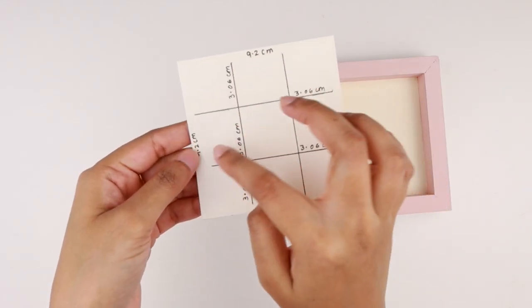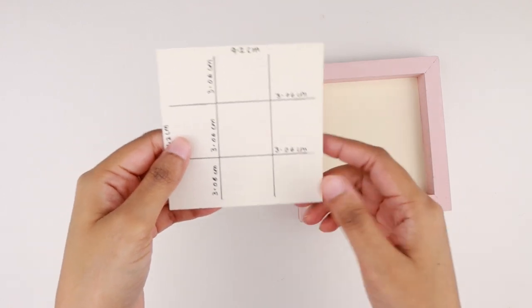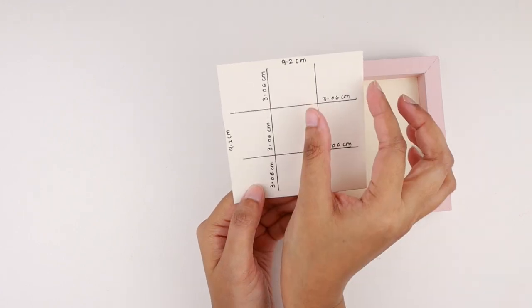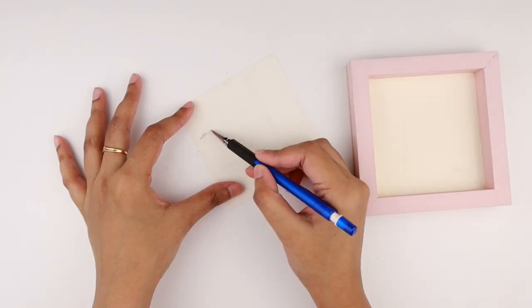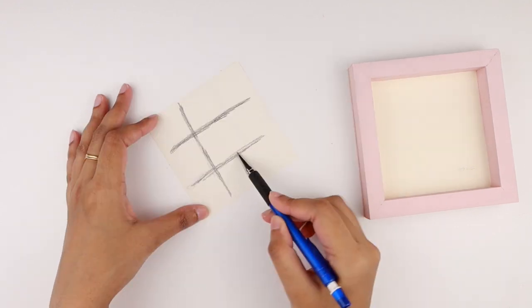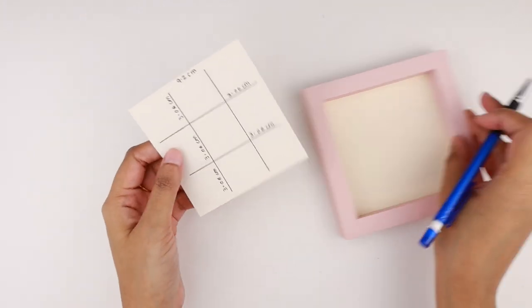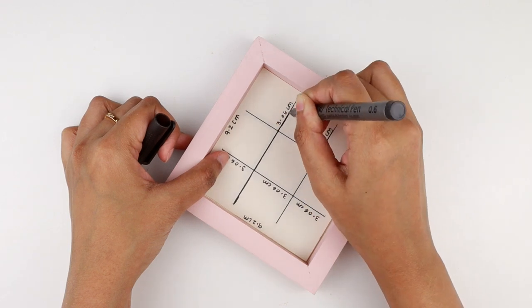Now I cut out a 9.2 by 9.2 centimeters piece of paper matching the dimensions of the inner square of the panel. I drew a 3 by 3 grid on the paper, dividing it into three equal sections horizontally and vertically. To trace this grid onto the wood panel, I shaded the lines with a pencil on the back of the paper. I flipped it over and placed it inside the panel, then drew over the lines to transfer the grid onto the wood.